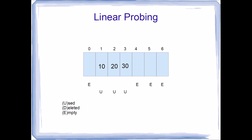Now let's say we want to remove a value — specifically 20. Applying the hash function with 20 returns a hash index of 1. We examine element 1, it's used, but contains 10, not 20. Linear probing says to look at the next element. At element 2, it is marked as used and contains 20 — we found it. To remove it, we mark that location as deleted, changing used to D, not empty; they have two different meanings.